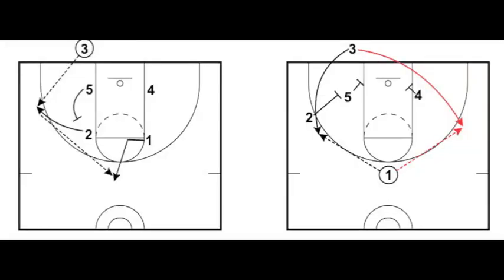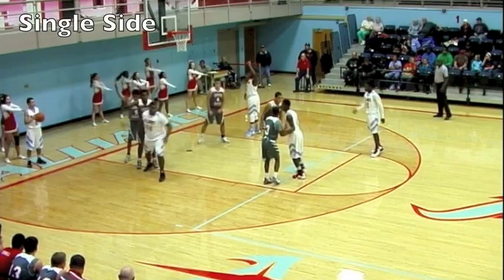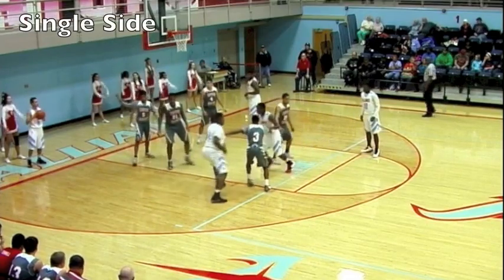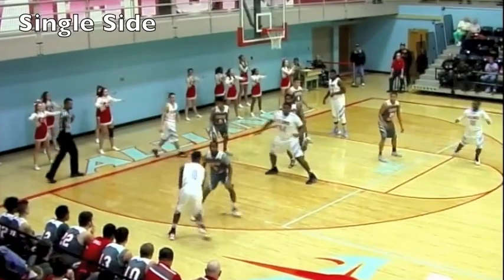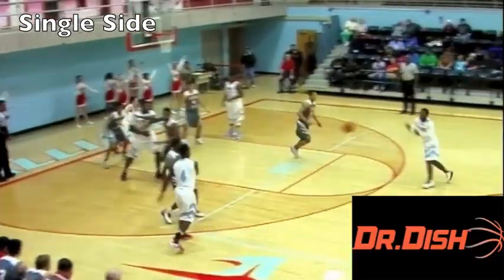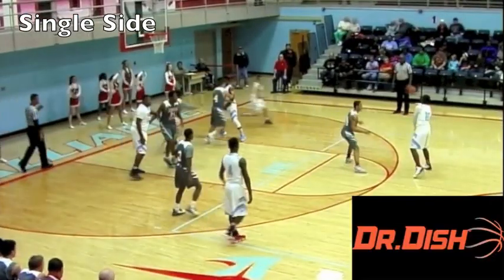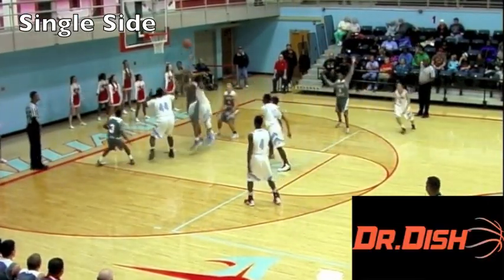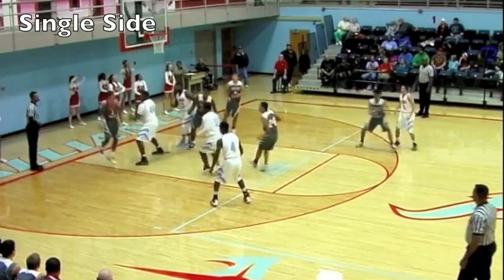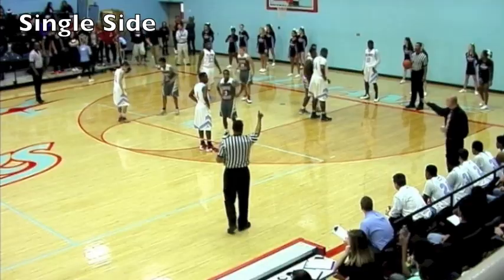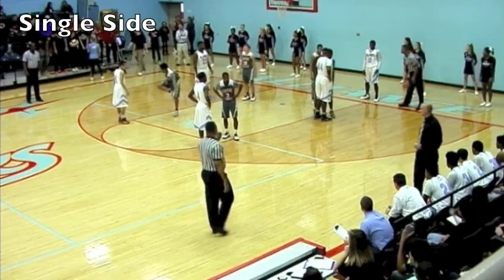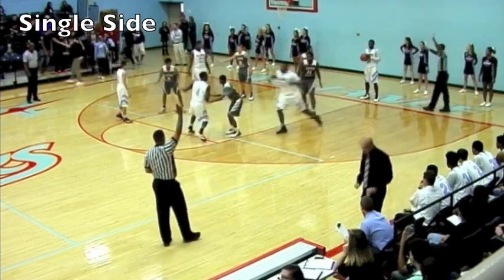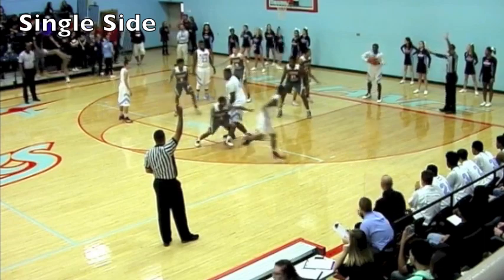In today's video we look at a basic baseline out-of-bounds play for the inbounder to be screened in for a shot in the corner. The baseline out-of-bounds can run to either side using a single screen to one side or a double screen to the other side, making it very similar to a floppy action in the half court.